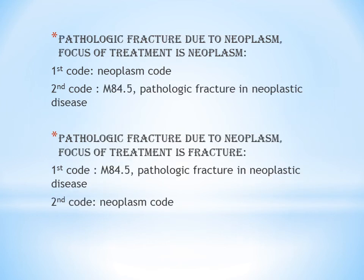The last two guidelines are pathological fracture due to neoplasm, and the focus of treatment determining sequencing. If a patient has neoplasm and also has a pathological fracture due to neoplasm — for example, bone malignancy may increase the tendency of bone fracture — what is coded first depends on the focus of treatment. If the focus of treatment is the neoplasm, code the neoplasm first and then pathological fracture code M84.5 second. If the focus of treatment is the pathological fracture, code M84.5 first and then the neoplasm code second.